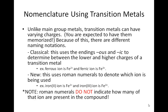Now, it is very important to remember: Roman numerals do not indicate how many of that ion are present in the compound. So if you have a compound that's iron 2 oxide, that does not mean that there are 2 irons. It means that the charge on the iron ion is positive 2. Very important to remember.